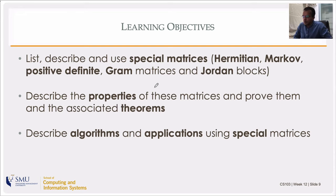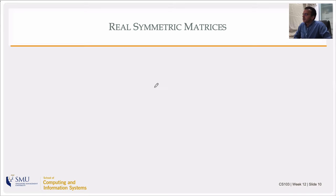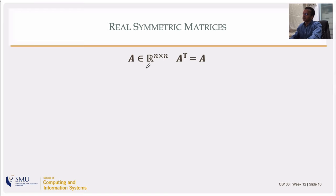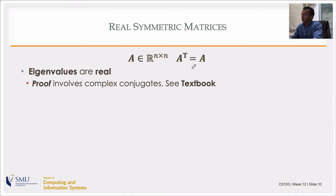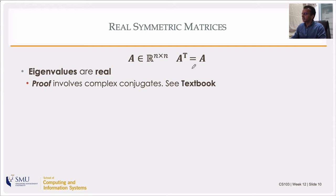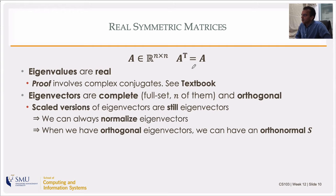Let's start with real symmetric matrices. Real means all elements of the matrix are real — A is a member of R^(n×n). Symmetric means its transpose equals itself: A^T = A. For such matrices, the eigenvalues are real — that can be proven, and the proof involves stepping into complex numbers and dealing with complex conjugates. Eigenvectors for real symmetric matrices form a complete set and are orthogonal.